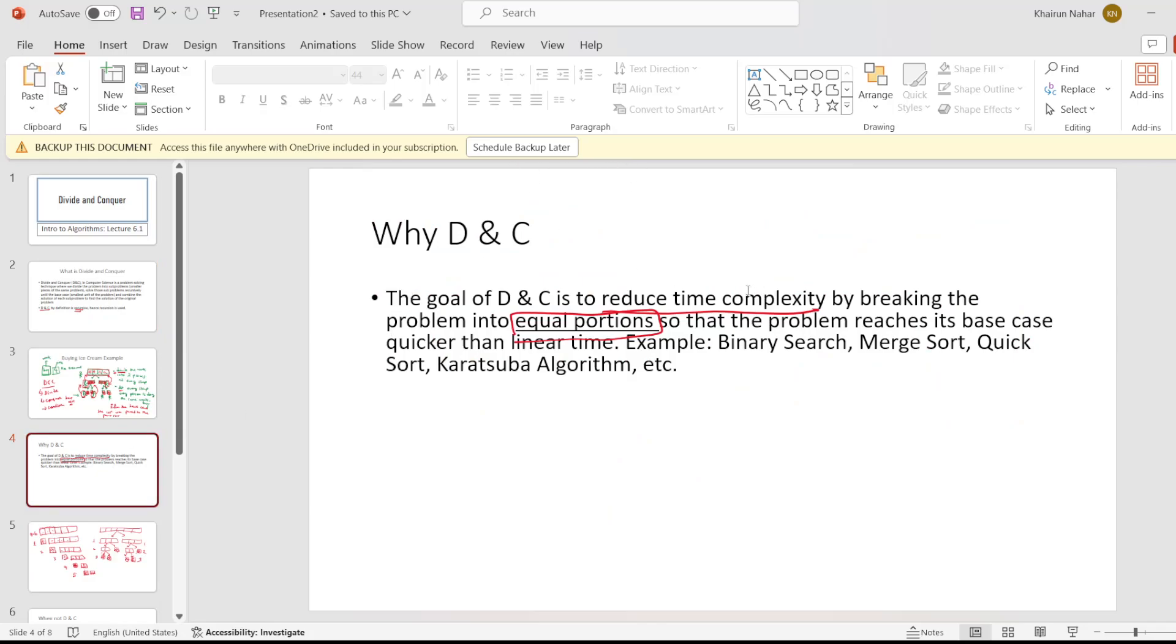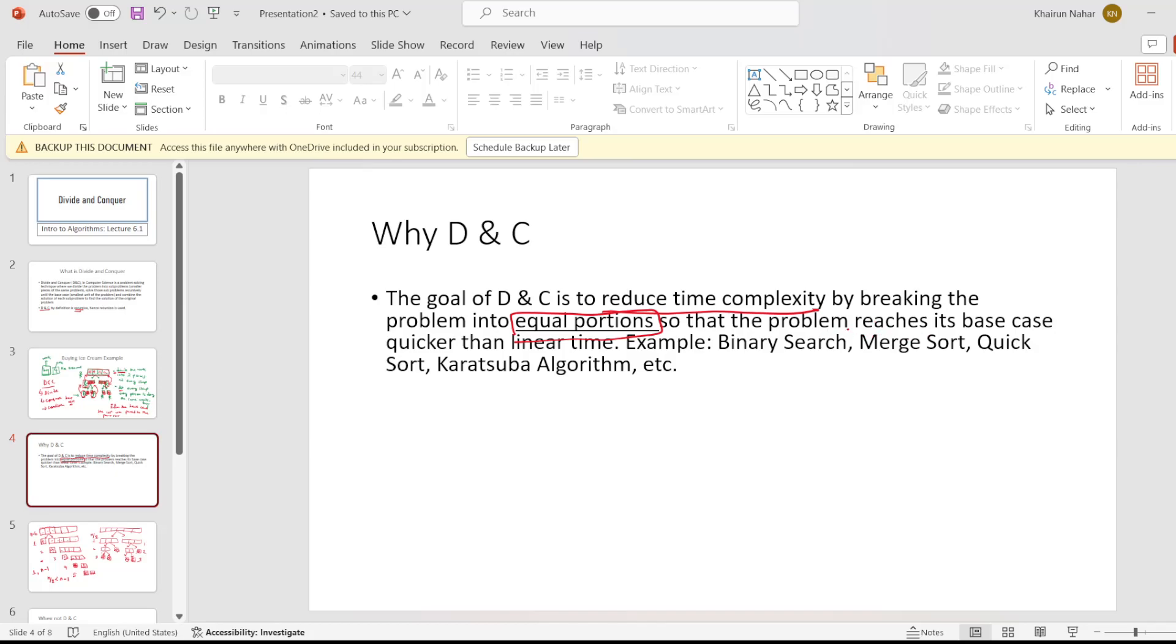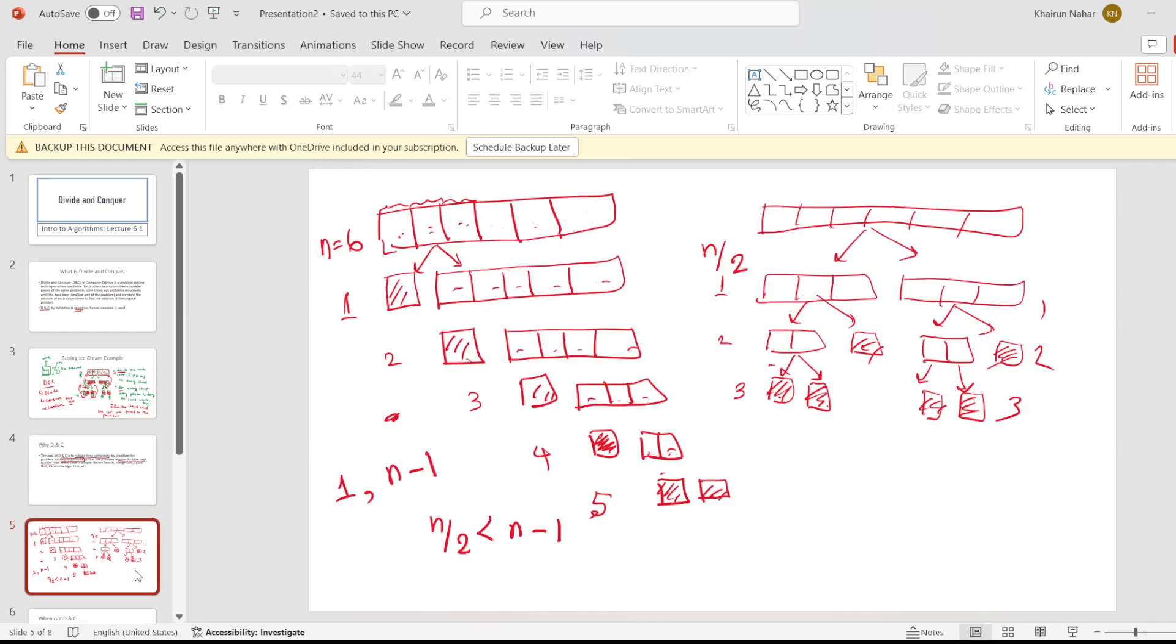Let's get back to this. Goal: reduce the time complexity by breaking the problem into equal portions. Now over here, one of them was 1, the other one was n-1. But in this example, doing the same work, the problem size at each step was n/2. So definitely n/2 is smaller than n-1. It reaches its base case quicker.